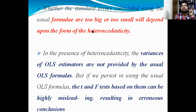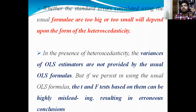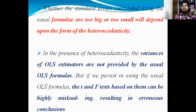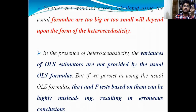Whether the standard errors estimated using the usual formula are too big or too small will depend upon the form of heteroscedasticity — which form of heteroscedasticity is existing in our model. Simply: when you are estimating with the OLS method, you are going to get wrong standard values. When standard values are wrong, you are going to get different T values. On the basis of T values, if you conclude, your results may mislead the public, other people, or the theory.